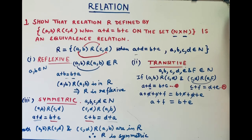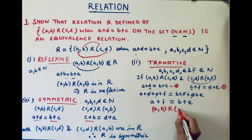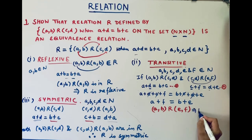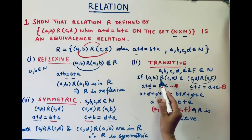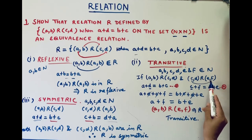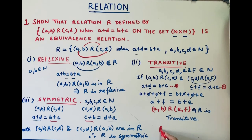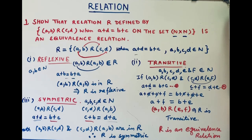Since a plus f equals b plus e, this means (a,b) is related with (e,f) in the given relation. Therefore R is transitive. So we have proved that (a,b) R (c,d) and (c,d) R (e,f) also implies (a,b) R (e,f). The given relation is transitive. Therefore R is an equivalence relation, as it is reflexive, symmetric, and transitive.